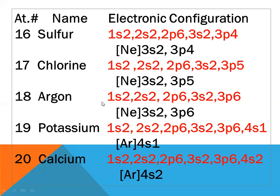Argon, atomic number eighteen: configuration 1s2 2s2 2p6 3s2 3p6. We write neon instead of the inner shell configuration. The valence configuration is [Ne] 3s2 3p6. The valence shell is completely filled, having eight electrons in 3s2 3p6.